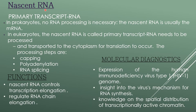Now I'm going to explain about nascent RNA. Primary transcript RNA is also called nascent RNA. In the case of prokaryotes, no RNA processing is necessary — the nascent RNA is usually the mRNA. Whereas in eukaryotes, the nascent RNA or primary transcript RNA needs to be processed and transported to the cytoplasm for translation to occur. The processing steps are capping, polyadenylation, and RNA splicing.